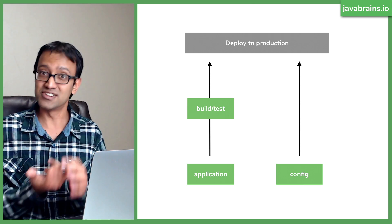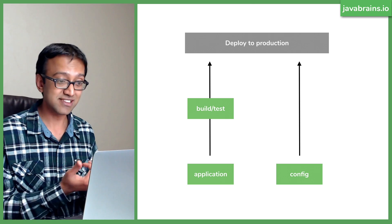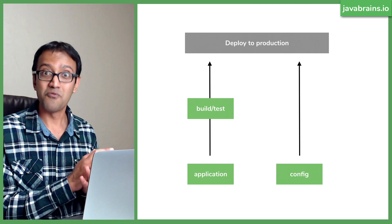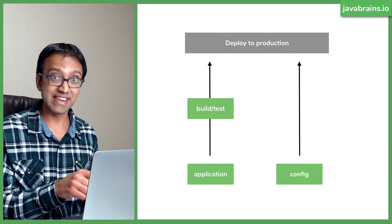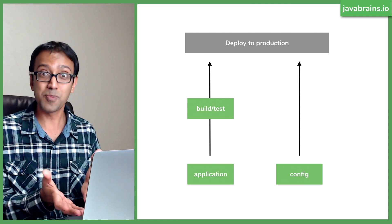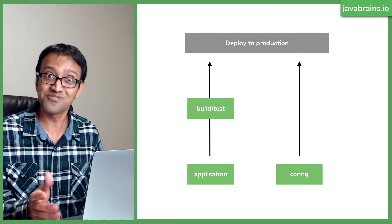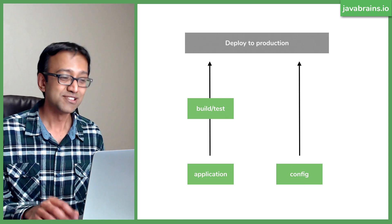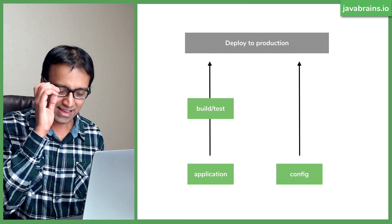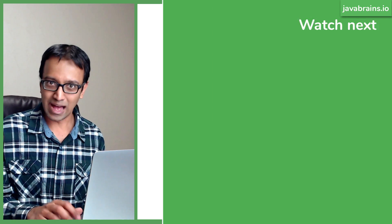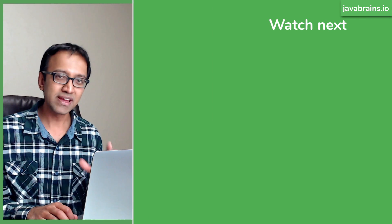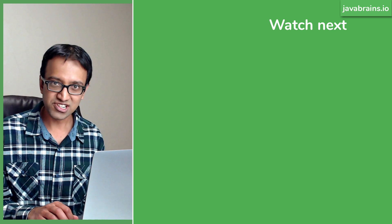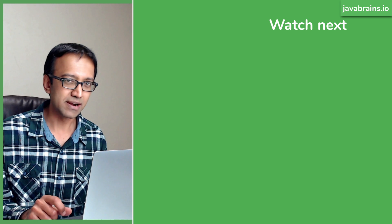So you get all the benefits of version control, and you can deploy to production without having to do the build and test cycle, because your repo is basically just config files. Let's take a look at setting this up. We will set up a Spring Cloud Config Server from scratch in the next tutorial. See you there.